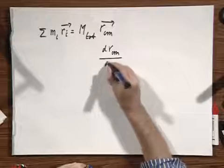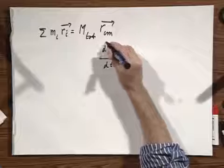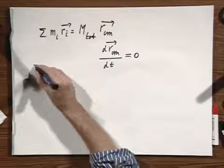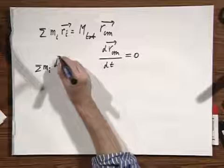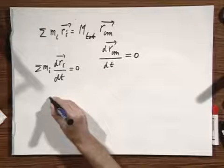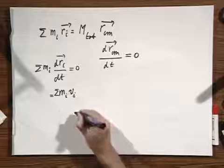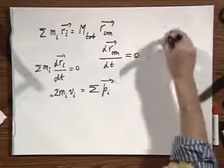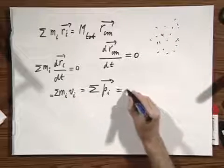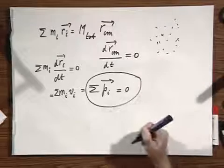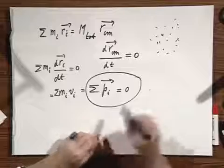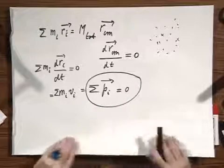Now you move in a frame of reference with the center of mass. That means dR_c/dt as seen from your center of mass frame must be zero, because the center of mass is not moving in your frame. That means the sum of m_i times dR_i/dt is also zero — but this is also the sum of m_i times v_i, which is the sum of the individual momenta of all these particles, and that must be zero. So if I move in the center of mass frame of reference, then before and after a collision, if there are no external forces, the total momentum is always zero. This is very characteristic and can be very handy in solving certain problems.